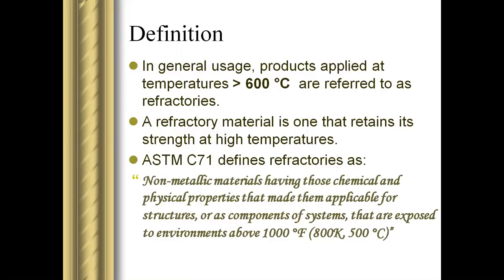Definition. Refractories are non-metallic materials. They are not metallic materials, but their physical and chemical properties are completely different. They are non-metallic materials which can withstand high temperatures — generally more than 600 degrees. These refractories retain their strength at high temperatures. According to ASTM C71, refractories are non-metallic materials having different chemical and physical properties, useful for important applications, which can withstand temperatures above 1000 degrees Fahrenheit.